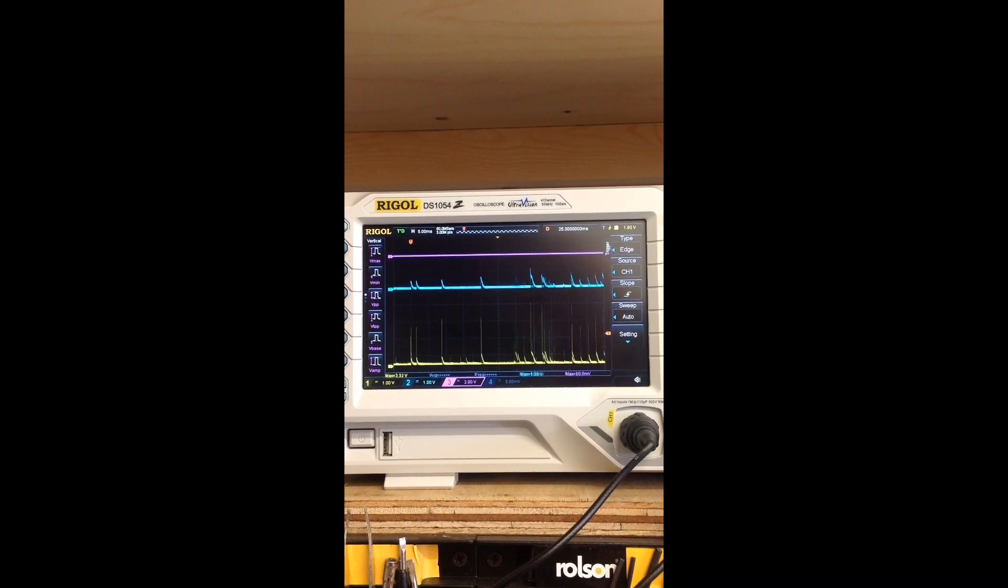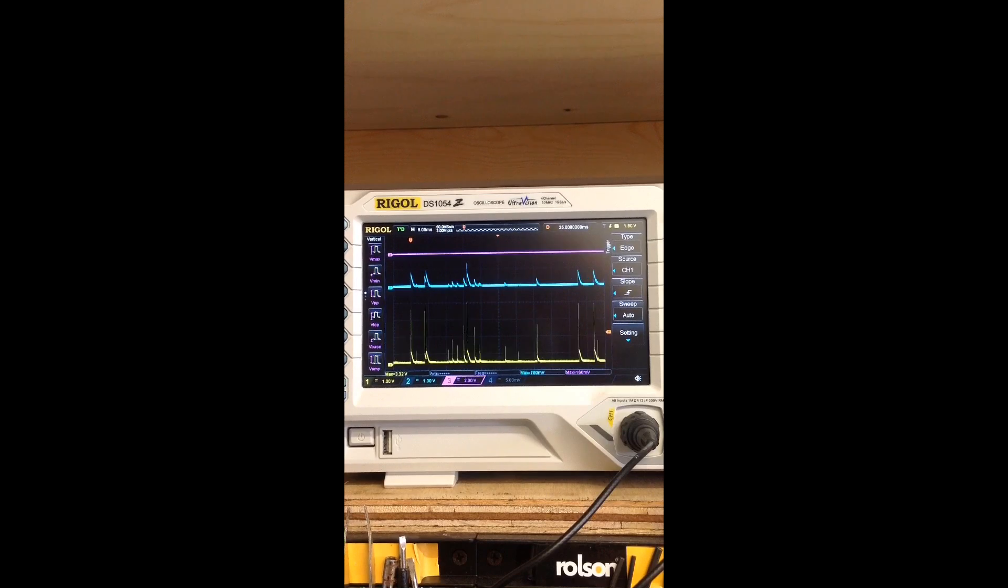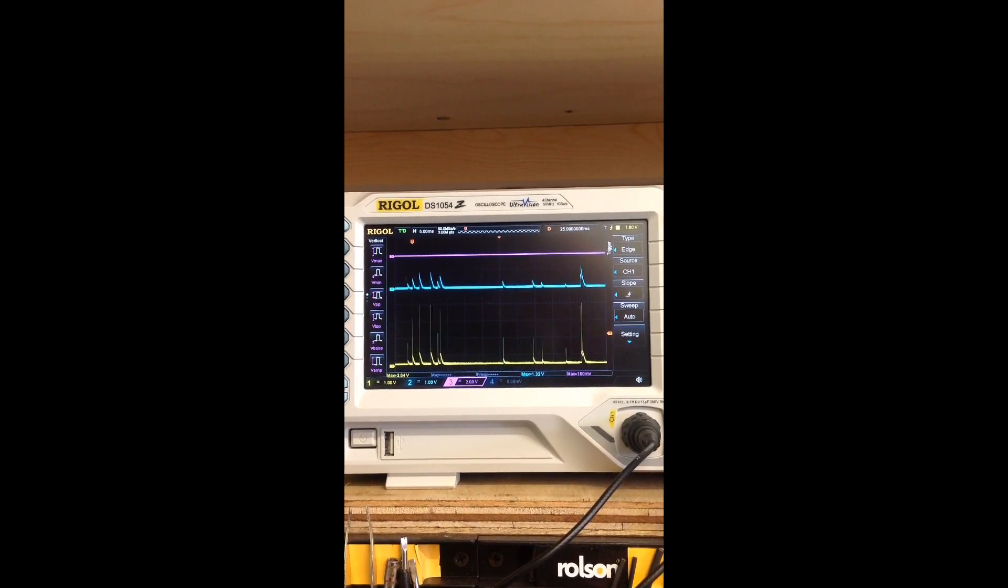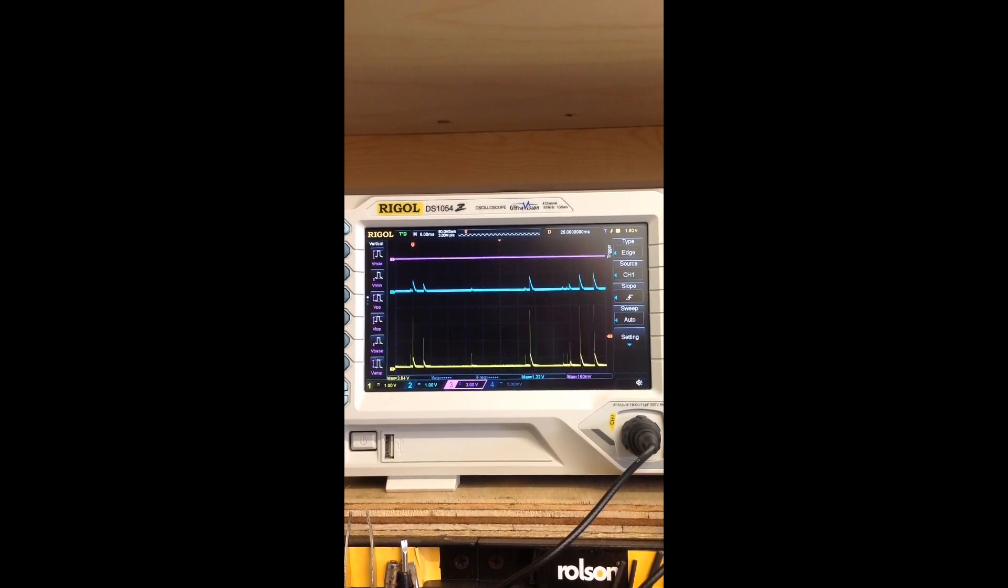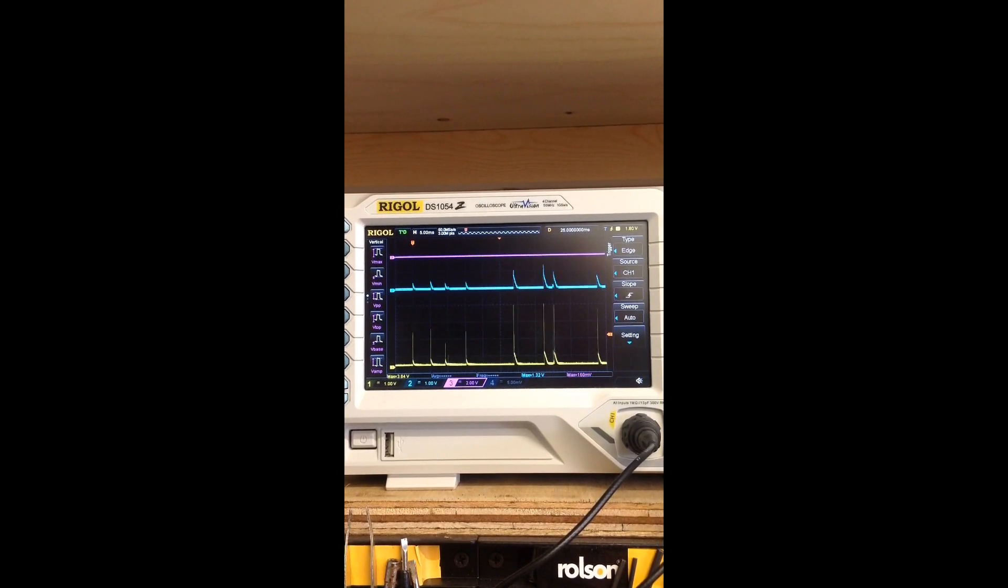This is the output measured on my oscilloscope. The yellow line is the output from the receiver. The blue line is after it's been through the low pass filter, and the purple line is after it's been through the Schmitt trigger.